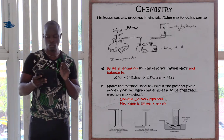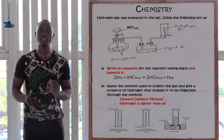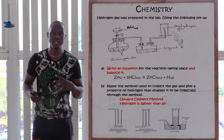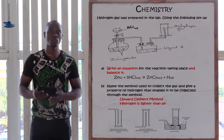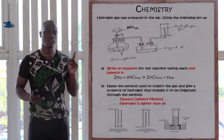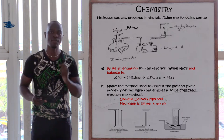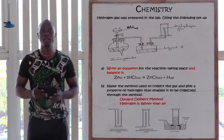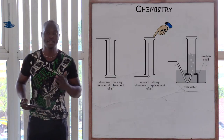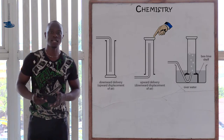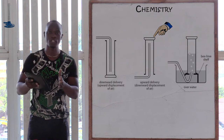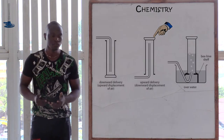The next question is: name the method used to collect the gas and give the property of hydrogen enabling it to be collected using that method. We have an inverted apparatus whereby the gas is being directed inside that apparatus which is upside down. This method of gas collection is referred to as the upward delivery method. There is also the downward delivery method, used to collect denser gases that are heavier than air. Hydrogen can also be collected using the over-water method. The property that allows hydrogen to be collected by the upward delivery method is that hydrogen is lighter than air — it floats above air and is collected on top of the inverted apparatus.